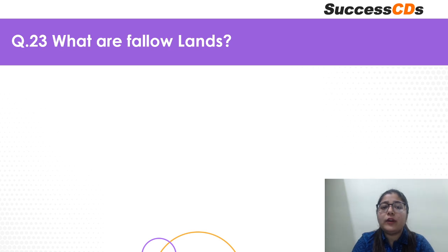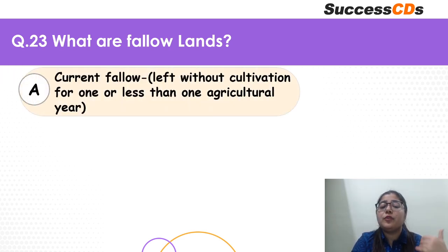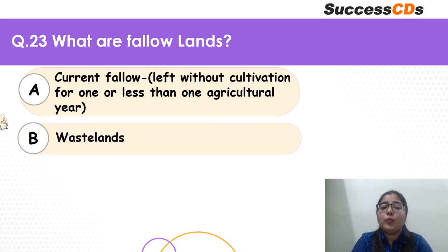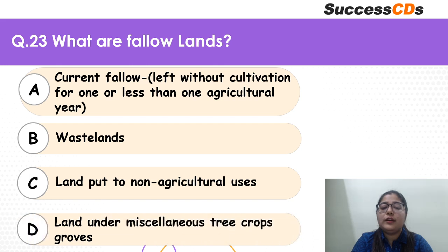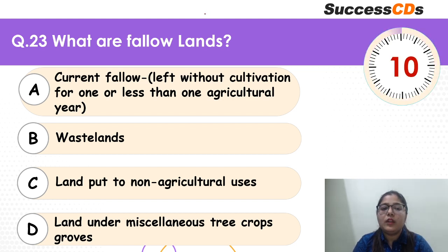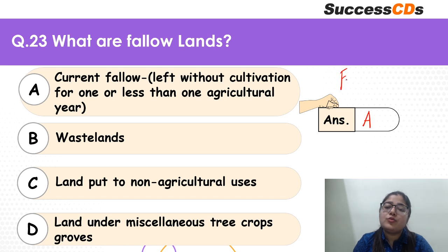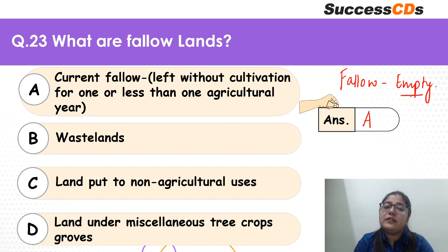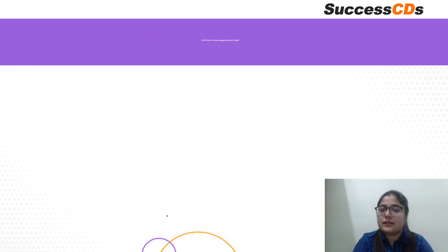Move to question 23: what are fallow lands? Current fallow — left without cultivation for one or less than one agricultural year? Waste lands? Land put to non-agricultural uses? Or land under miscellaneous tree crops and groves? The correct answer is A. Fallow lands are those left empty for some time — if left for one year or less, we call it current fallow. There is no cultivation happening there, but it does not become a wasteland.